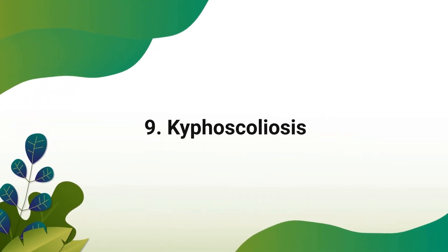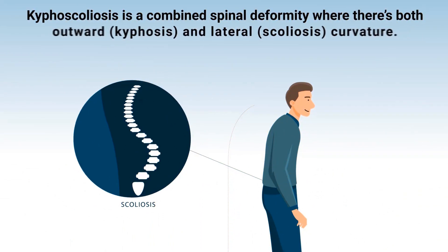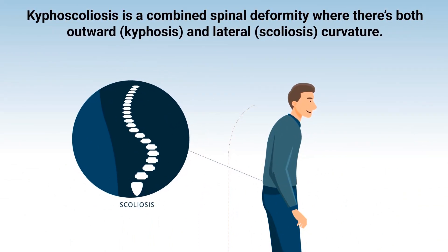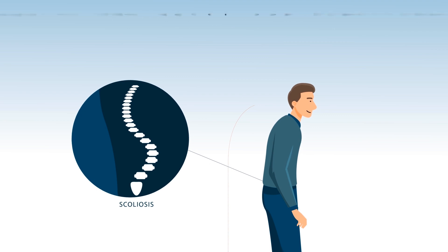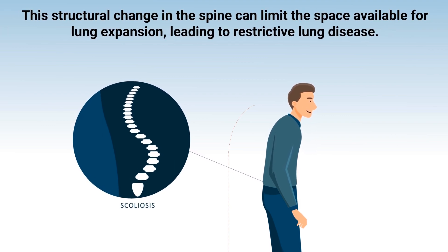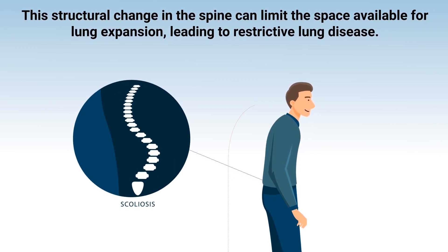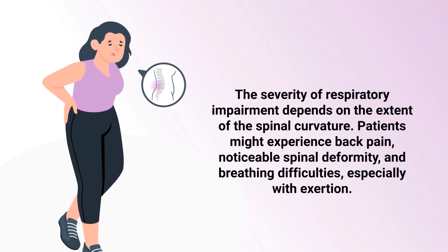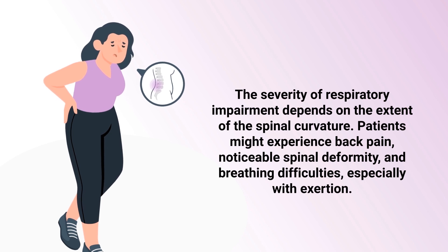Kyphoscoliosis is a combined deformity where there's both outward and lateral curvature of the spine. This structural change in the spine can limit the space available for lung expansion, leading to restrictive lung disease. The severity of respiratory impairment depends on the extent of the spinal curvature. Patients might experience back pain, noticeable spinal deformity, and breathing difficulties especially with exertion.